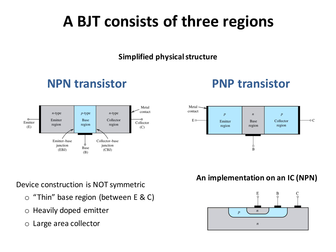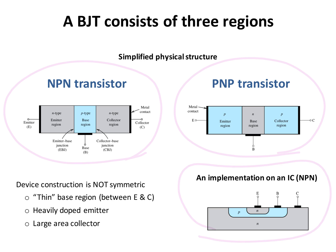BJT transistors come in two types: NPN and PNP transistors. In an NPN type, a P-type semiconductor is placed between two N-type semiconductors. In a PNP transistor, an N-type semiconductor is placed between two P-type semiconductors. Here is a picture of the implementation of an NPN transistor on an IC. As you can see in the picture, the base region is the region between the collector and emitter.